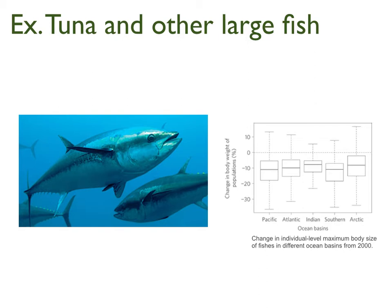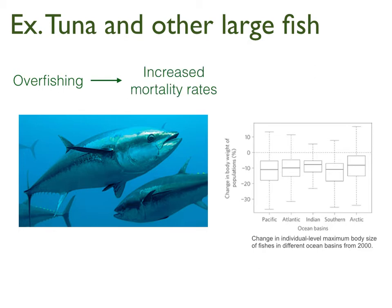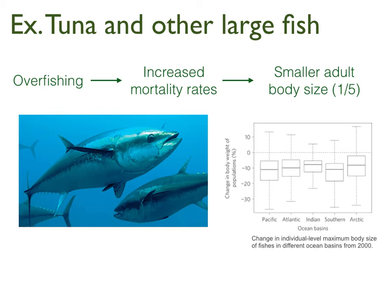We can apply a life history argument to explain why this is. Overfishing by large companies targets larger fish, which are worth more, leading to increased mortality rates of adults — especially large adults. Increased mortality rates mean that organisms tend to decrease their lifespan and shorten their juvenile period, as covered in the life history lecture. This leads to smaller adult body sizes, with shorter lives and shorter growth periods. Since we began measuring fish body size, the estimate is that large fish like tuna are actually one fifth of the size they used to be — a clear example of the tragedy of the commons.